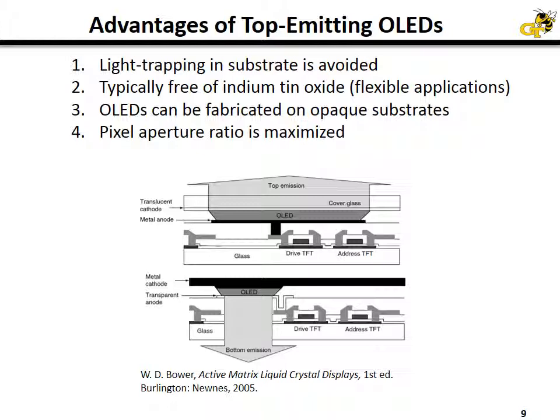We've also moved away from indium tin oxide electrodes in favor of thin metals, which allows the advantage of using these in flexible applications. Top-emitting OLEDs can also be used on opaque substrates. And specifically in displays, you can maximize the emissive area because you can have the OLED extend over the driving electronics in an active matrix display, maximizing the so-called pixel aperture ratio and allowing you to extend the lifetime of the OLED because you don't have to drive each individual OLED very hard to attain a desired brightness on screen.